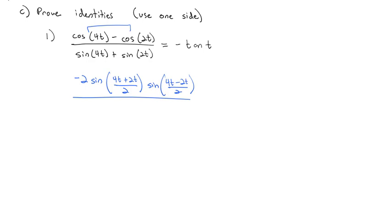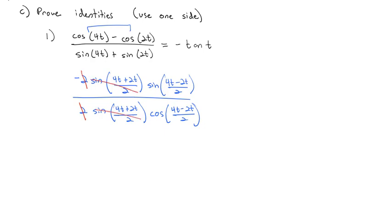The denominator, sine plus sine, becomes 2·sin((4t + 2t)/2)·cos((4t − 2t)/2). The 2's cancel, and the first sine factor is exactly the same on top and bottom, so it divides out. We're left with −sin(t)/cos(t), which equals −tan(t) — exactly what we wanted. QED, we have proved that identity.